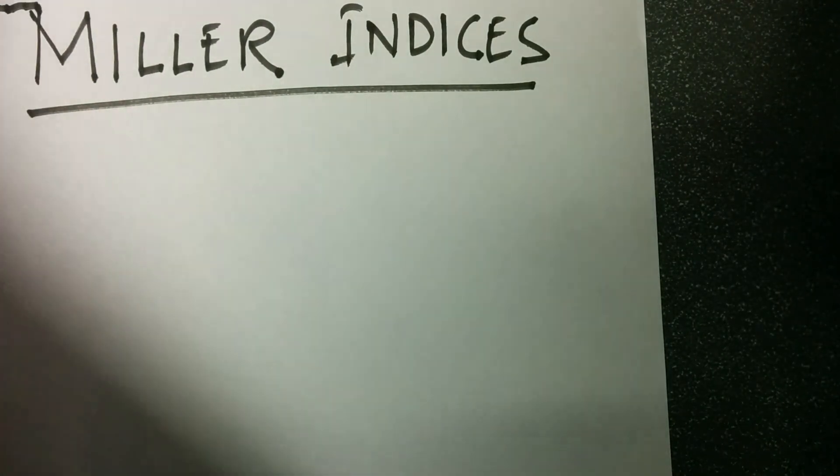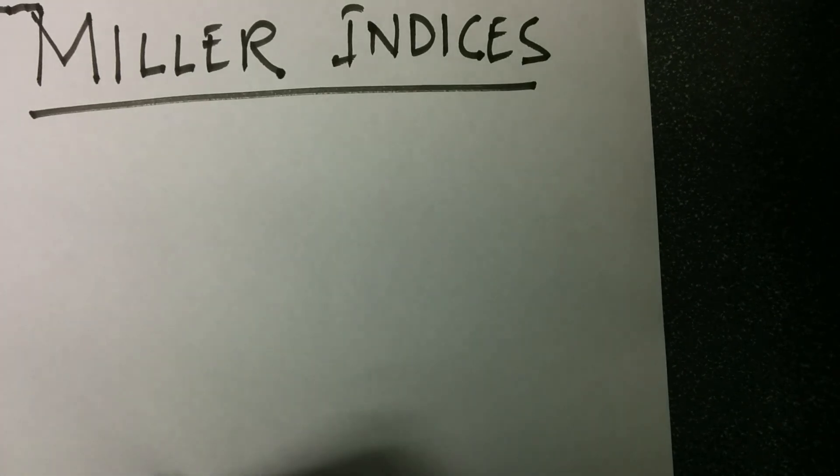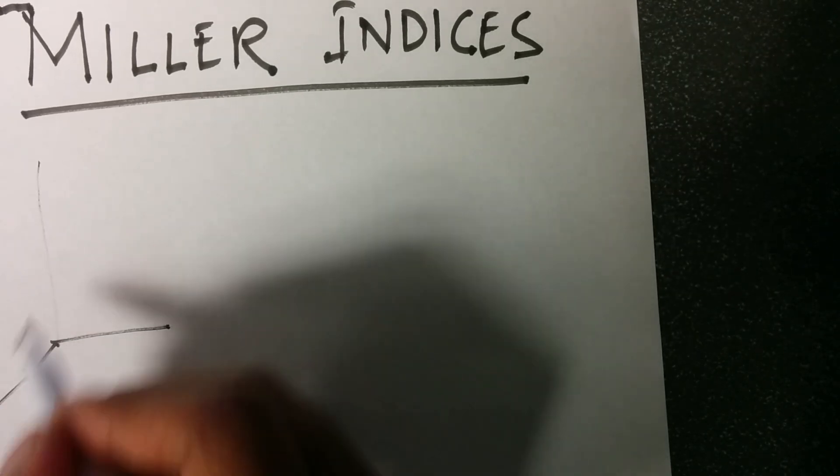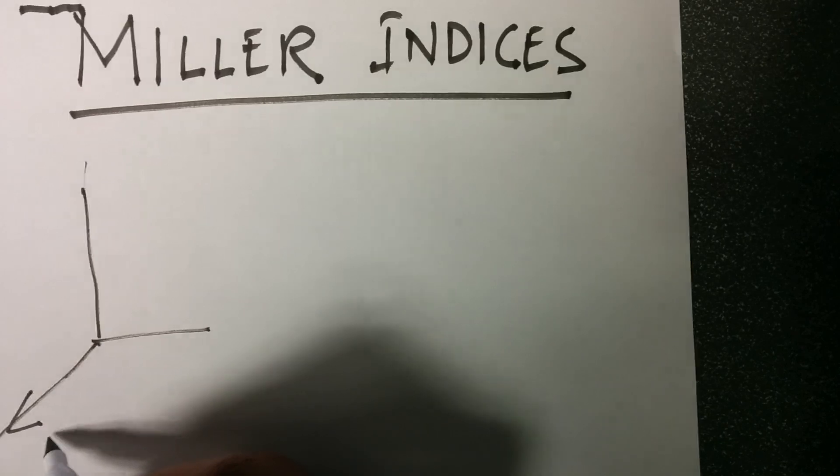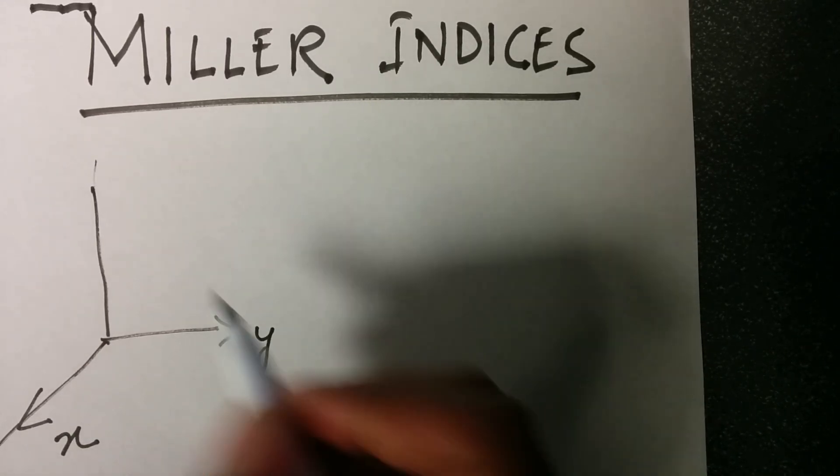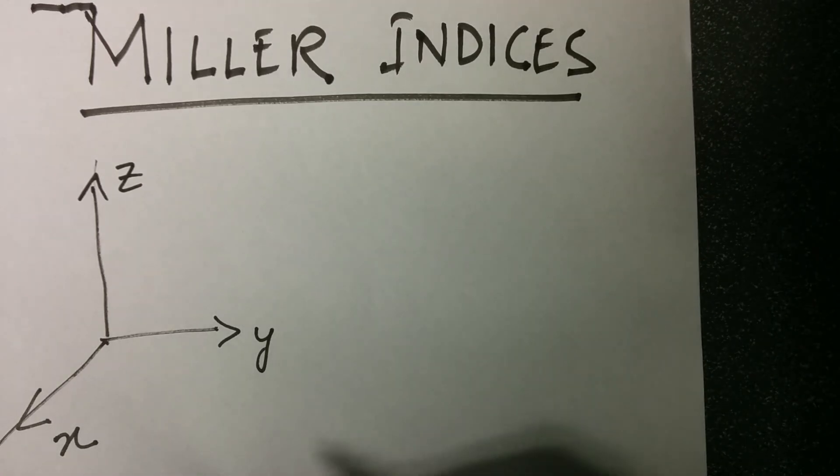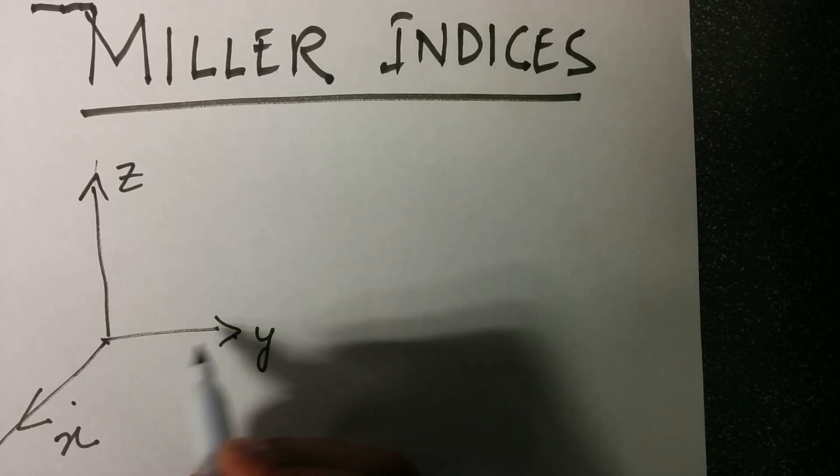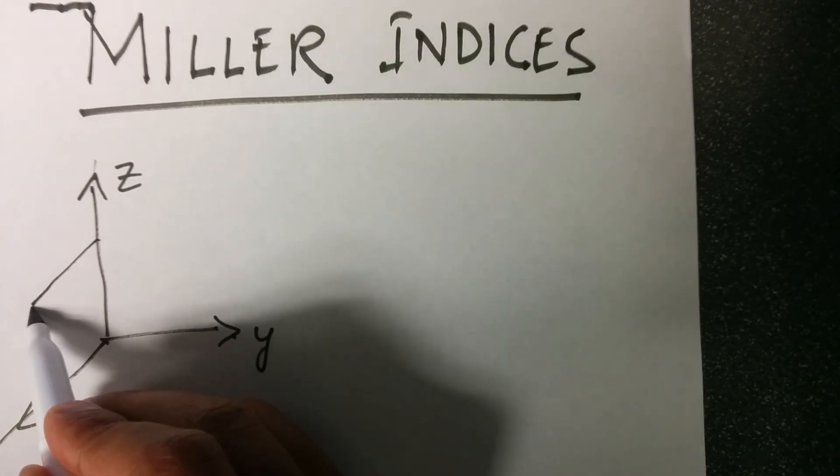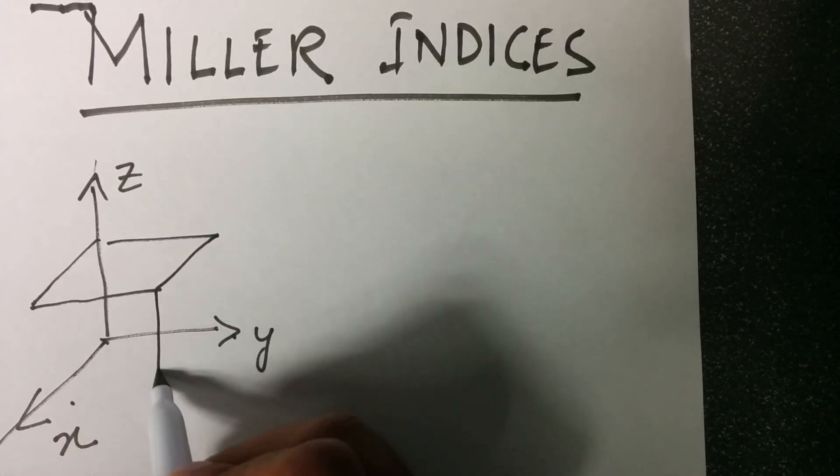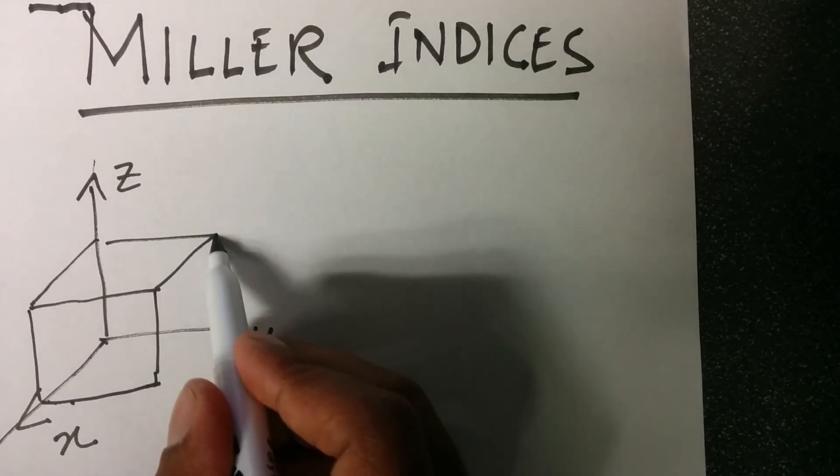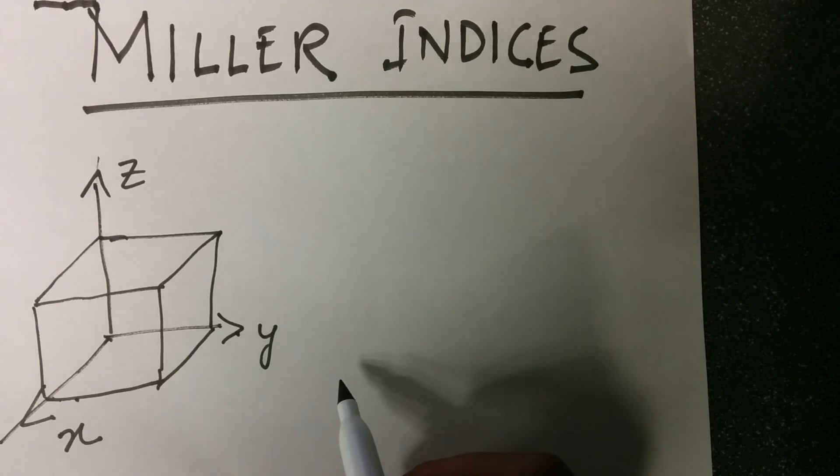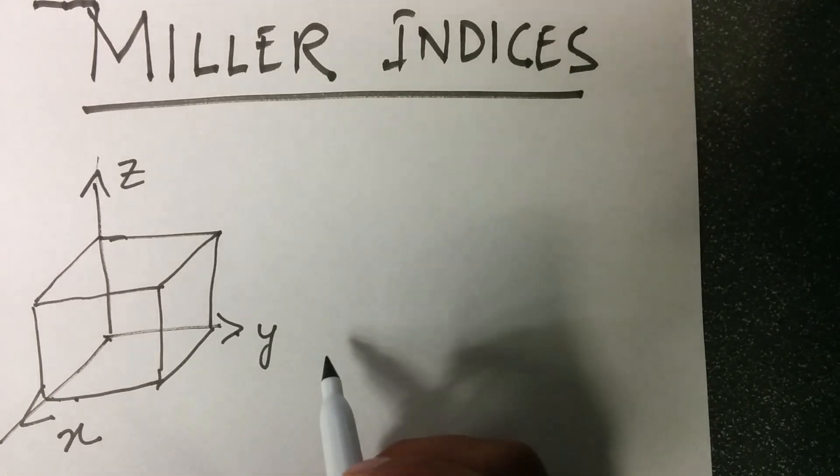For finding what are Miller indices, we first have to draw a simple unit cubic cell. We draw the x-axis, y-axis, and the z-axis. It's a right-handed coordinate system, as you can understand that if you take a cross product of x to y, it will give z. Now we draw a unit cube, a unit cube is a cube whose each side is of unit length in any unit dimensions.